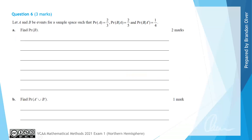For question 6, we have: let A and B be events of a sample space, such that the probability of A is 2/3, the probability of B given A is 2/5, and the probability of B given A complement is equal to 1/4. For part A, we're asked to find the probability of B.